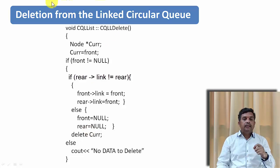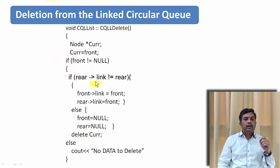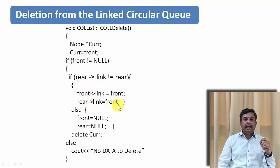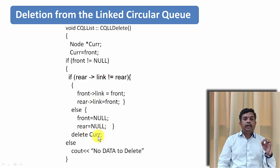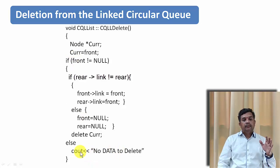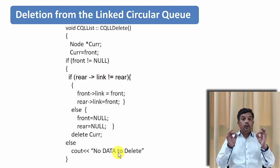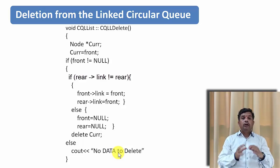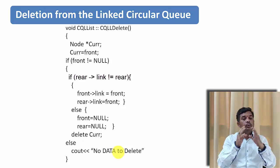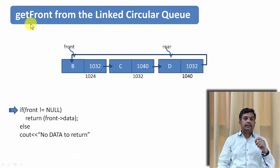Let us see the program segment — it reflects exactly what we did. If front is not null, and if rear's link is not equal to front, then front's link equals front and rear's link equals front; otherwise front equals null and rear equals null. Then we delete current. If front is null the condition is not satisfied and we say we cannot delete any more data. I hope you understood how to delete a node from a circular queue represented by a linked list.